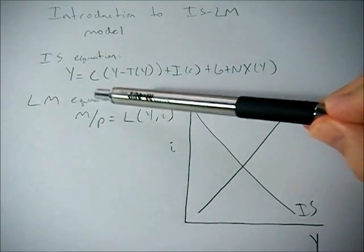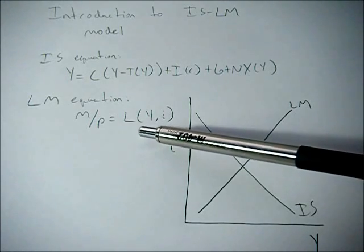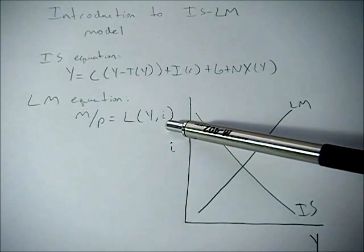LM equation, we have our money supply over the price level equals our liquidity preference for money or our money demand equation, which is a function of GDP, income, and the interest rate.